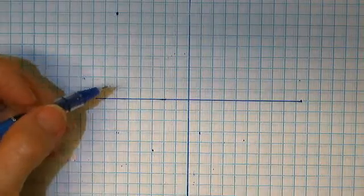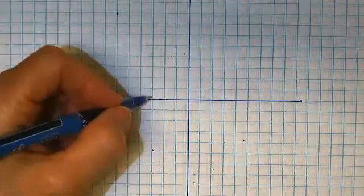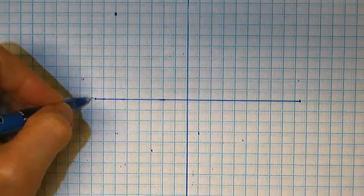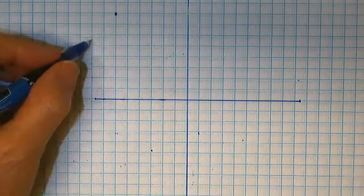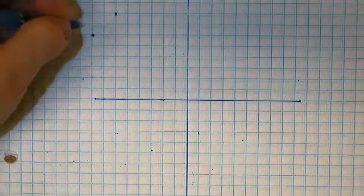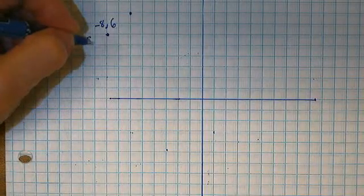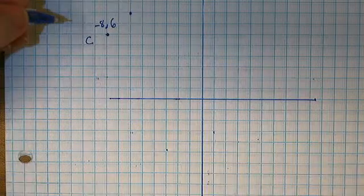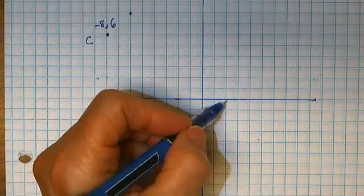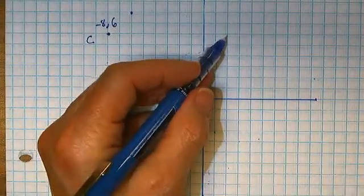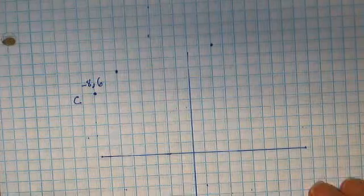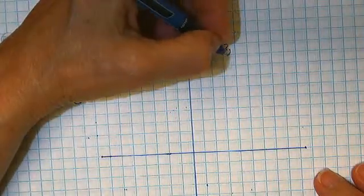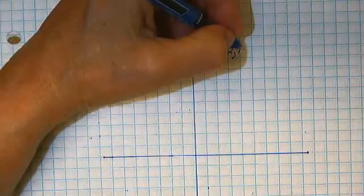The endpoints of CD are negative 8, 6. That's point C. And D is 2, 10.